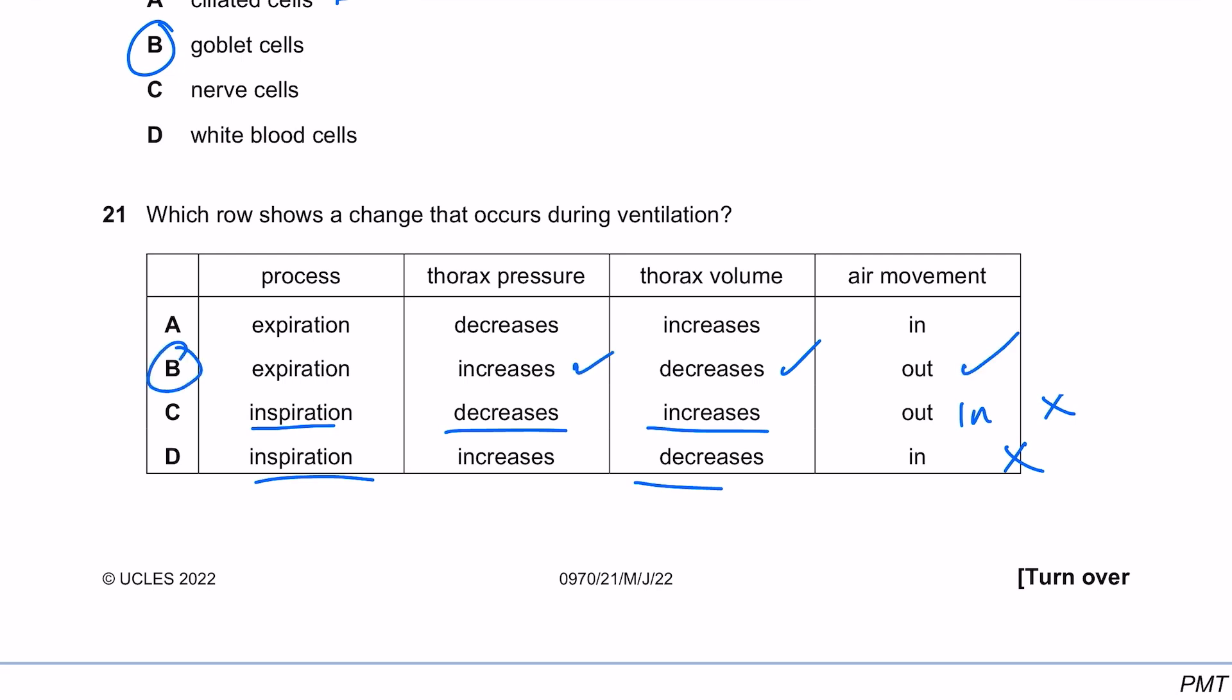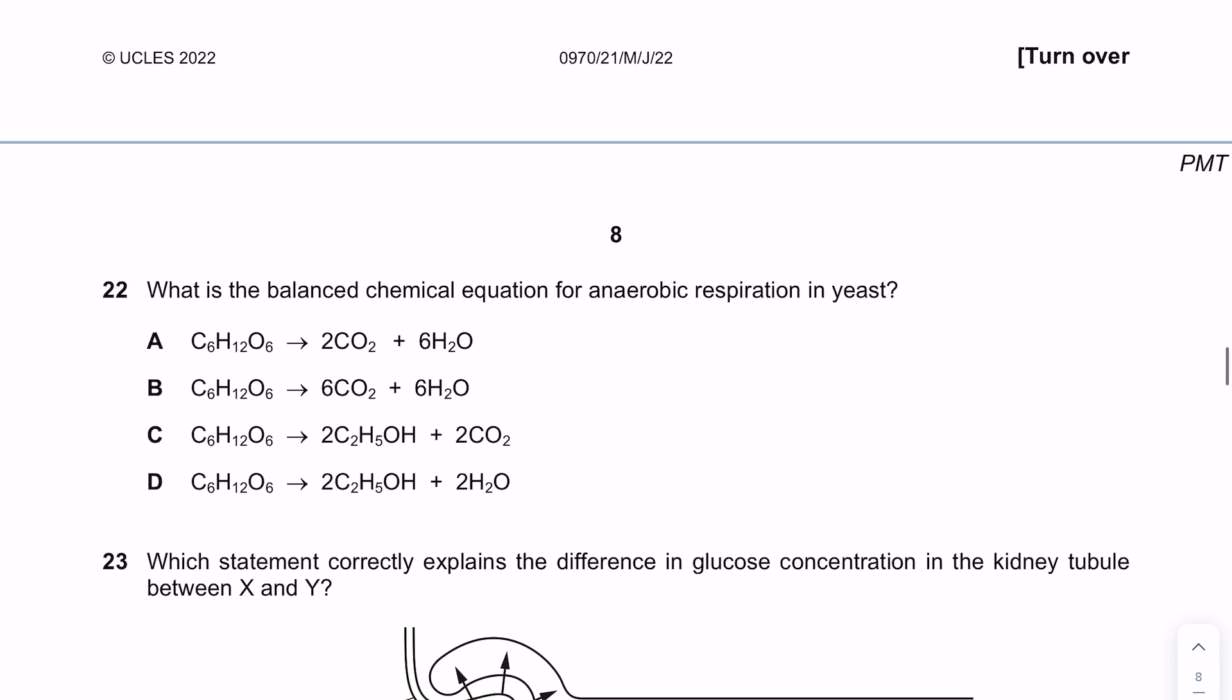What is the balanced chemical equation for anaerobic respiration in yeast? Remember you're taking glucose and you're making ethanol and carbon dioxide when there's no oxygen supplied. So now we need to identify C6H12O6 - these are all glucose. This one's wrong because we've got water. We need ethanol and carbon dioxide, so the answer here is C.